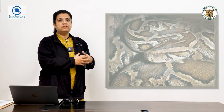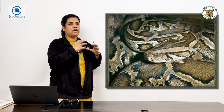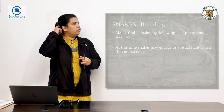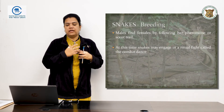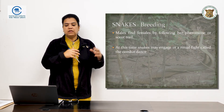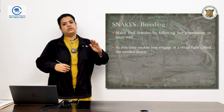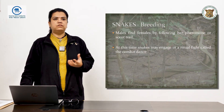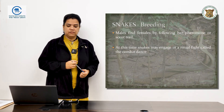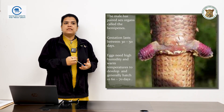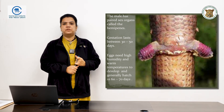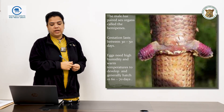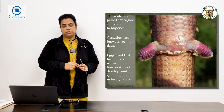Pythons, when they lay their eggs, encircle them and repeatedly constrict their muscles to produce heat, which helps incubate the eggs — a process known as brooding. For courtship and mating, males follow each other and in some species perform a combat dance, pressing the opponent's head to the ground; the loser moves away and the winner gets the female. This is driven by pheromone signals released by the female during breeding season. Males have a paired sex organ called the hemi penis. Gestation lasts 30 to 50 days, eggs require high humidity or specific temperatures depending on the species, and they generally hatch 60 to 70 days later.